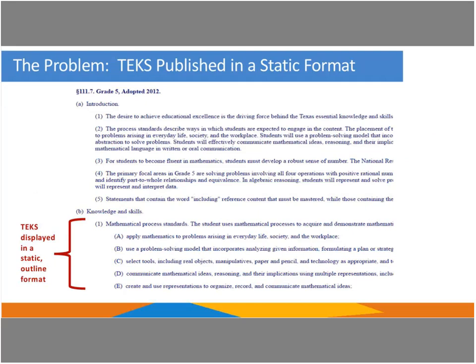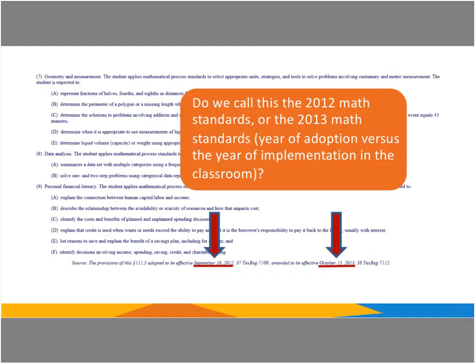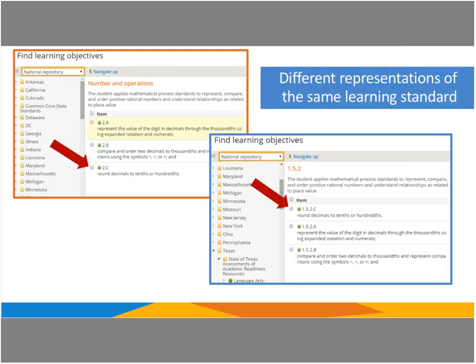The issue came from our TEKS — our learning standards — being published in a static format. It was just a standard HTML page from TEA's website. They were written in outline form but they were static, and they were left up to the interpretation of various vendors who would extract these learning standards and publish them in their own proprietary way. When we had revisions, people were getting confused — for example, do we call these the 2012 TEKS or the 2013 TEKS? We also had the exact same learning standard called different things. For instance, rounding decimals to tenths or hundredths: on the left it was called 2.C, but on the right it was called 1.5.2.C.